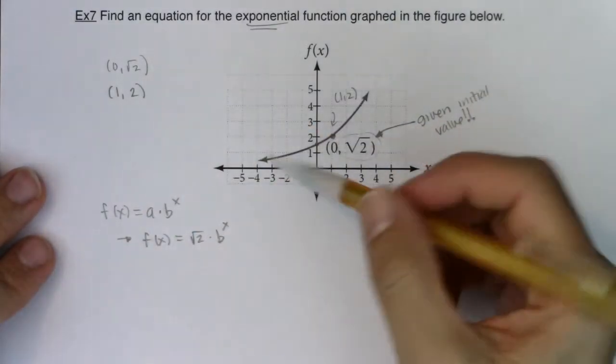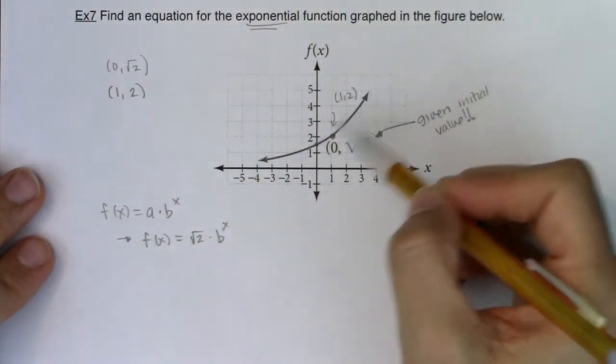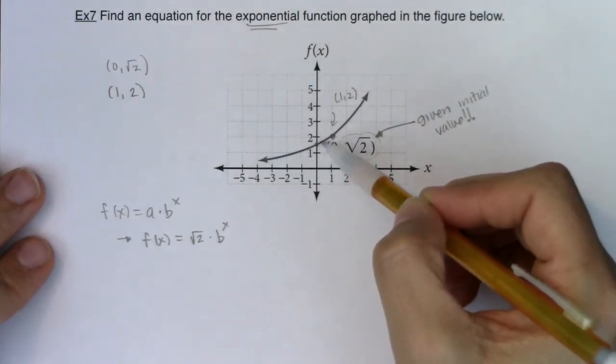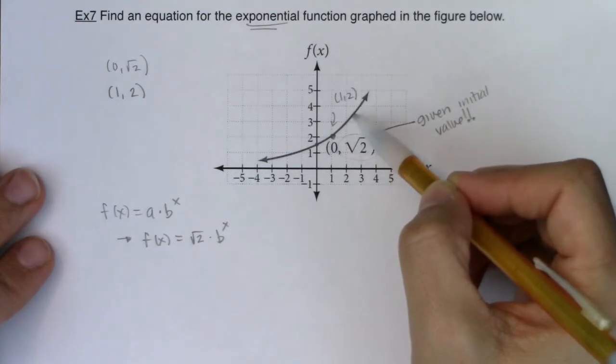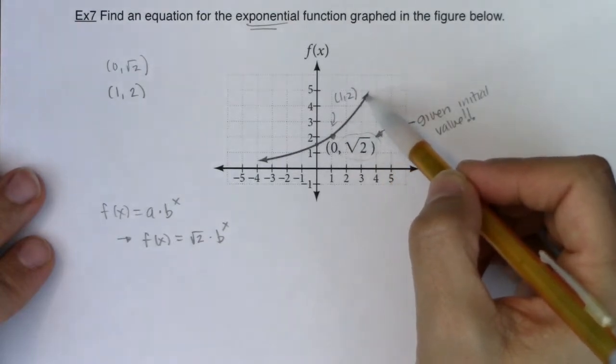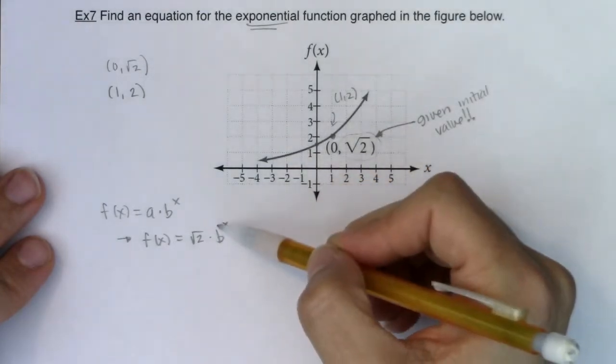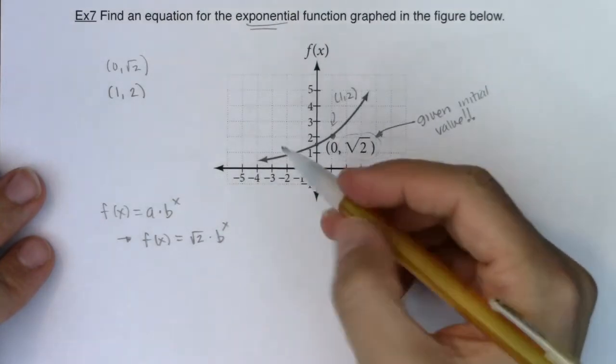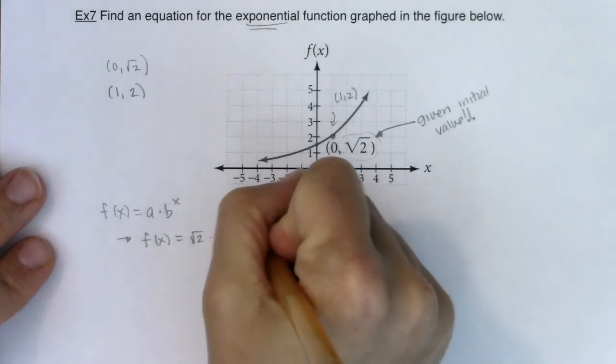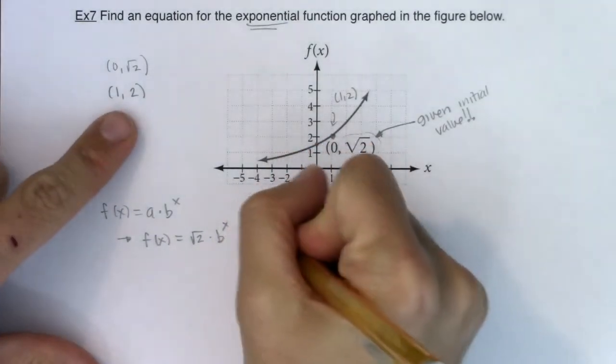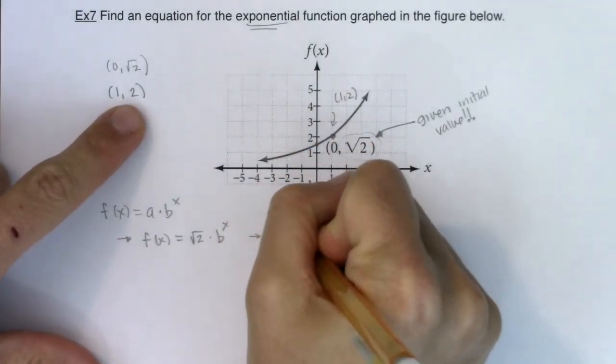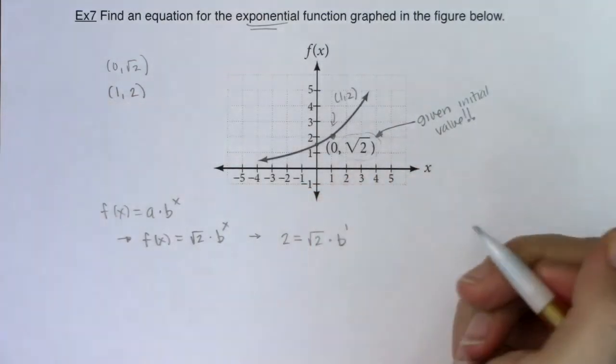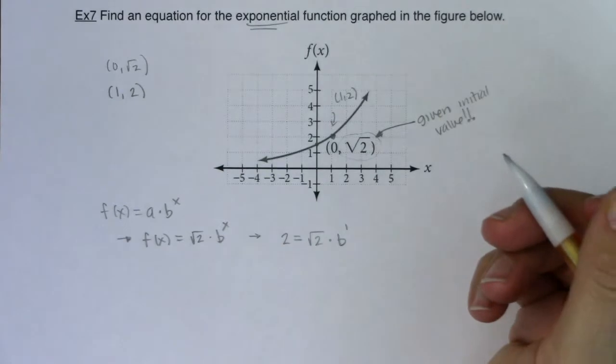Before I get going, just looking at the graph, I can see that's exponential growth. As my pencil moves left to right, it's headed up. So the y values must be getting larger, meaning I should have exponential growth. And I mention that because whatever I get for my base value should be larger than 1. So let's plug in 1, 2. So 2 is the y value and that will equal √2 times b to the 1.